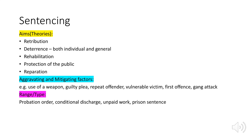Moving on to sentencing. The aims and theories include retribution, deterrence (including both individual and general), rehabilitation, protection of the public, and reparation. Aggravating and mitigating factors include use of a weapon, guilty plea, repeat offender, vulnerable victim, first offence, and gang attack. The range and types of sentence include probation order, conditional discharge, unpaid work, and prison sentence.